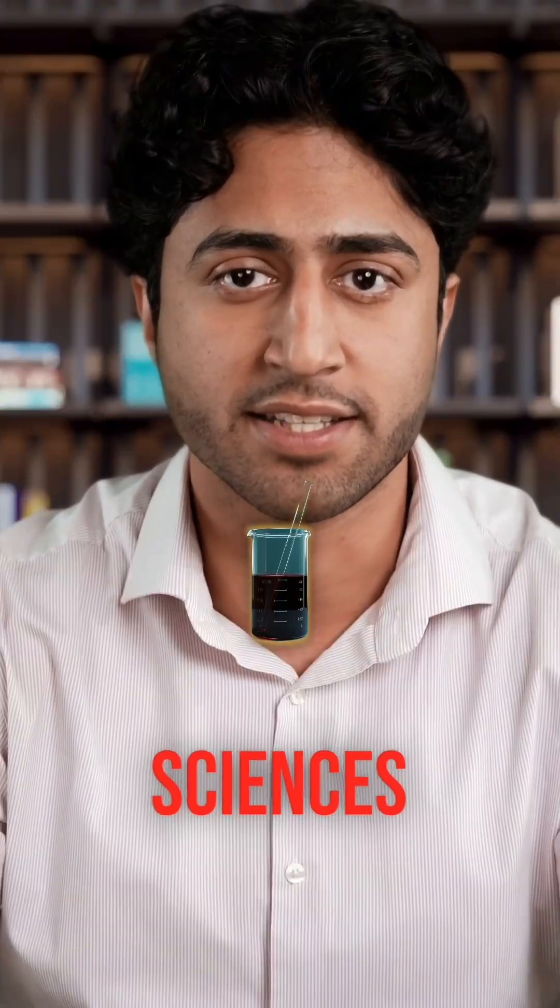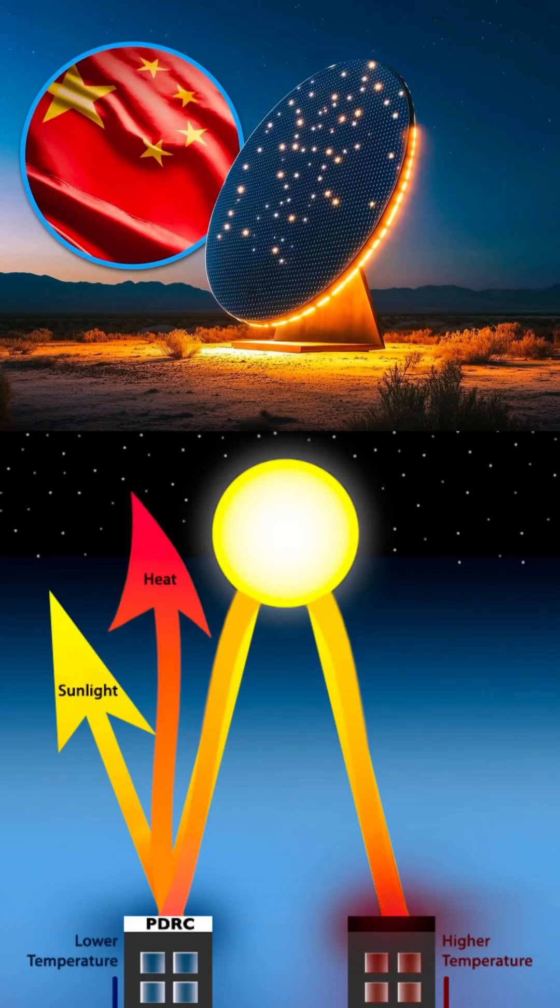Scientists at the Chinese Academy of Sciences have created a sealed hydrovoltaic cell capable of generating electricity continuously, even in the absence of sunlight.